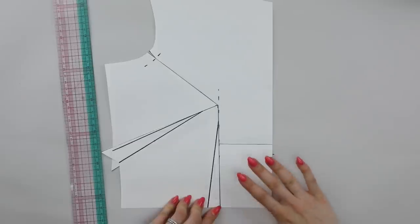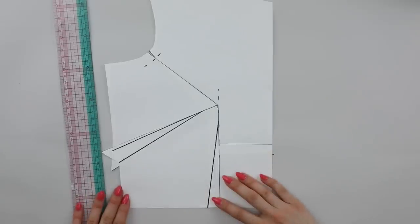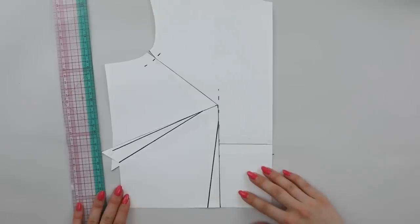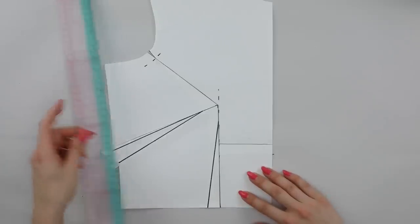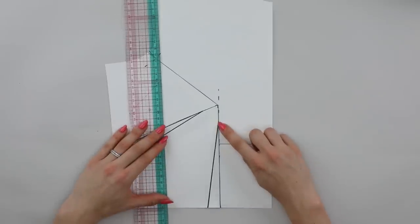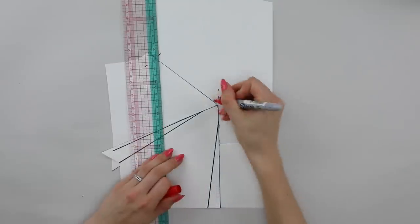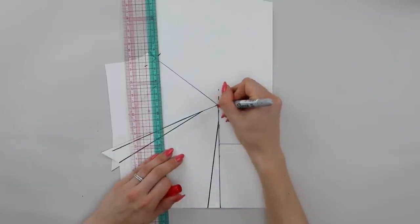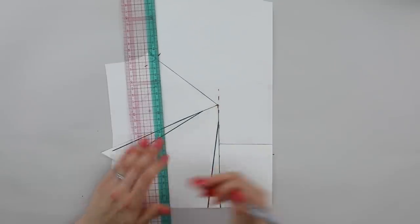Now presuming that the waist of the pattern fits you as it is, we are going to need to redraw the waist dart. So what I would like to do here is I'd like to position the waist dart centrally underneath the bust apex. We are going to presume now, because we don't know any different, that this is the position of your bust apex.